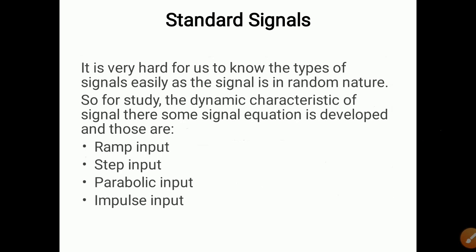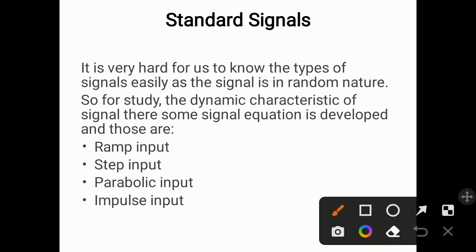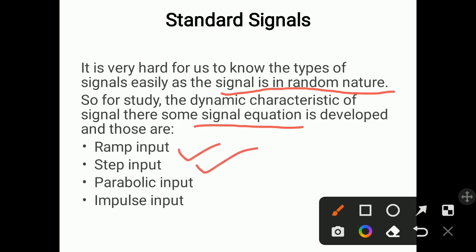Sometimes standard signals are used. It is very hard to know the types of signals easily because signals are random in nature. For studying the dynamic characteristics of a signal, some signal equations are developed. Standard signals used include ramp input, step input, parabolic input, and impulse input. These standard signals allow us to study characteristics very easily.